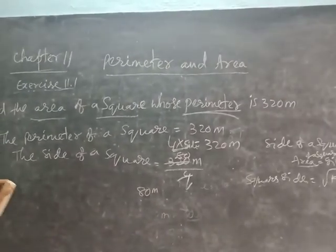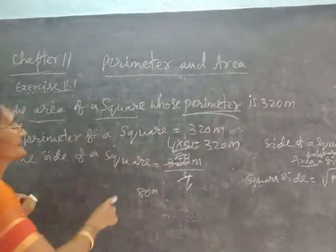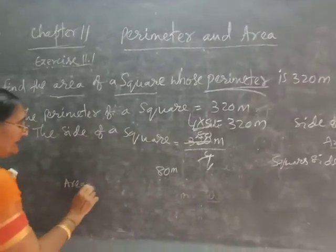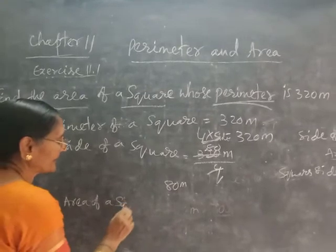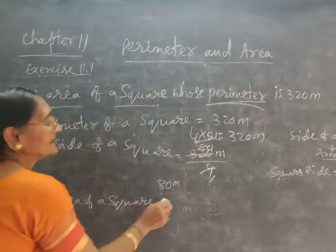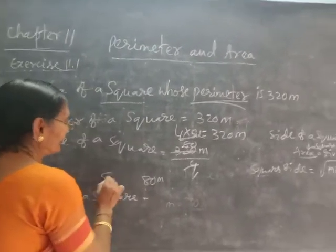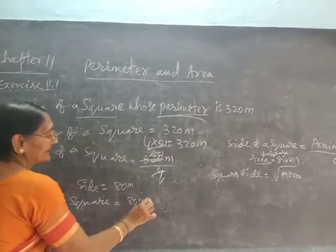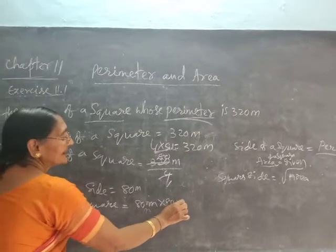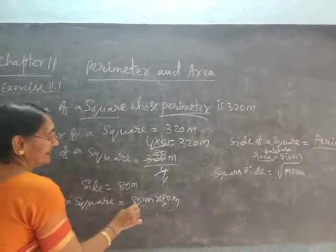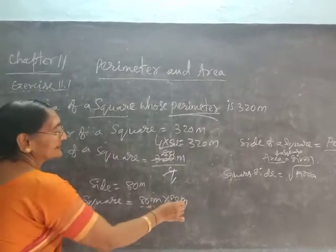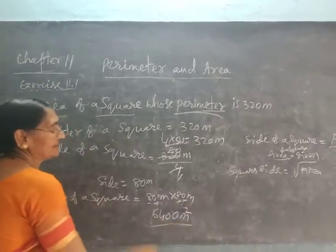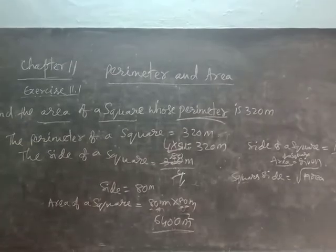The area is being asked. Area of the square = side × side = 80 m × 80 m. 8 × 8 = 64, with one zero from each giving two zeros total, so area = 6400 square meters. That is the area of the square.